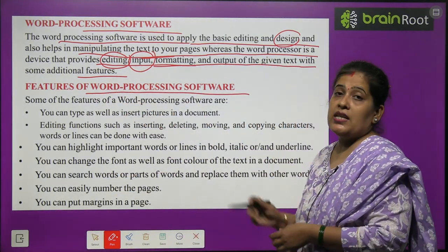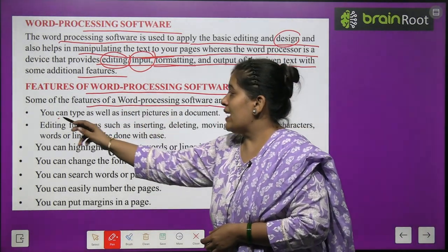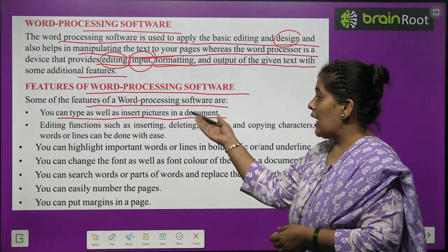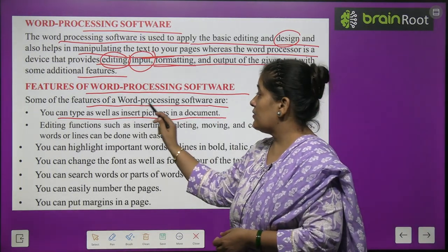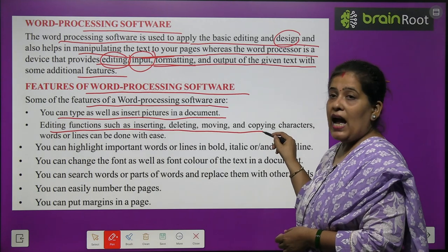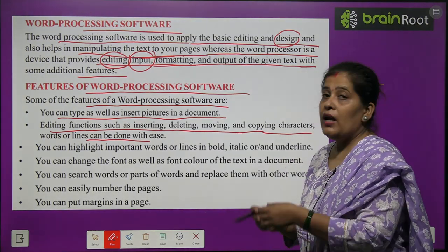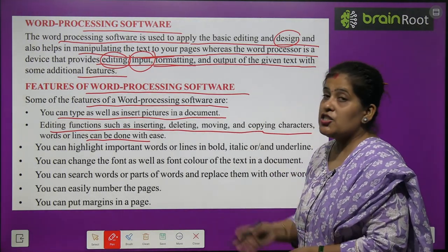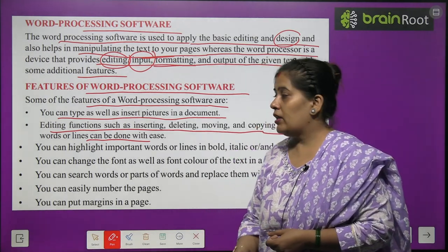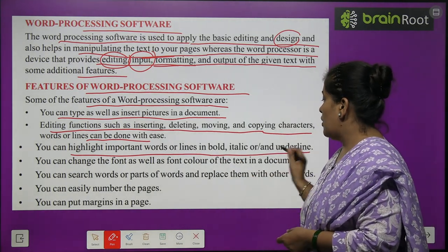Now, features of word processing software. Some features are: you can type as well as insert pictures in a document. Editing functions such as inserting, deleting, moving and copying characters, words or lines can be done with ease. You can highlight important words or lines in bold, italic or underline.